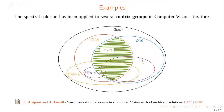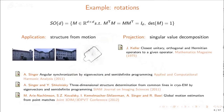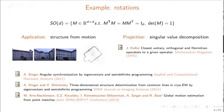The spectral solution has been applied to several matrix groups in the computer vision literature. One example is the case of rotations, which admit a matrix representation through orthogonal matrices with unit determinant. The final projection can be done using singular value decomposition. An example where this solution can be applied is the structure from motion problem, where the task is to recover both camera positions and orientations and the coordinates of points in the scene from multiple images. We are concerned here with the rotation component of camera motion.